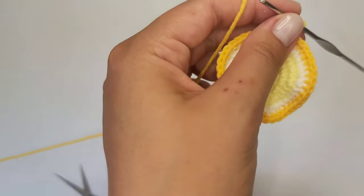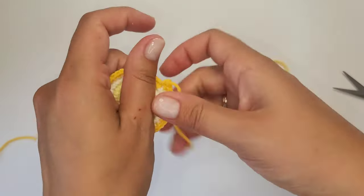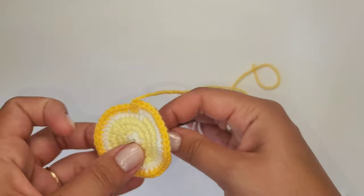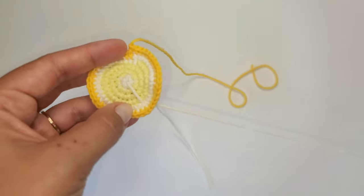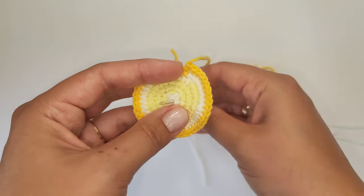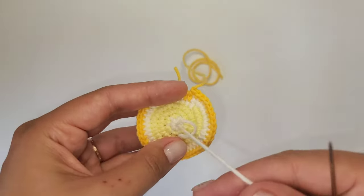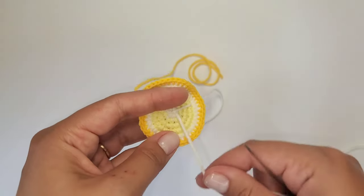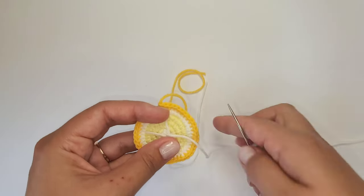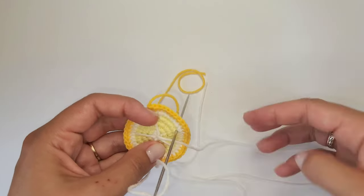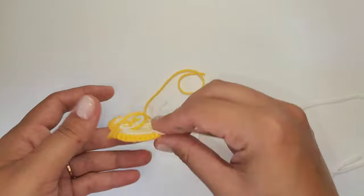Cut the thread, leaving a long tail for sewing. Now embroider stripes using white thread. Fasten off and cut all the yarn tails.